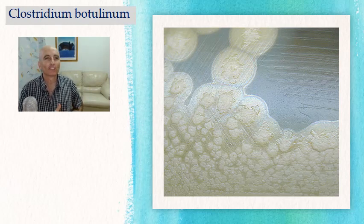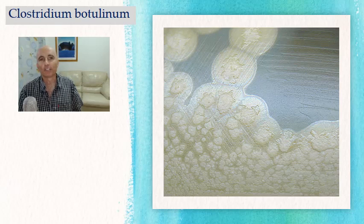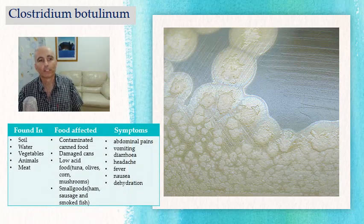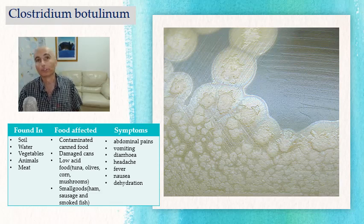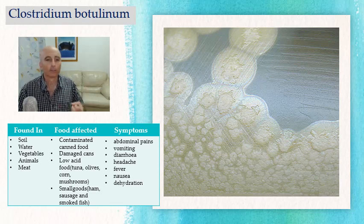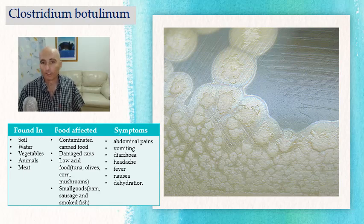One of the better known ones is Clostridium botulinum. It is anaerobic, so it doesn't need oxygen. It's found in soil, water, vegetables, and animals. The foods particularly associated with it are canned foods, damaged cans, low-acid foods like tuna or olives, and small goods. Symptoms include abdominal pain, vomiting, diarrhea, nausea, and severe dehydration. It produces a deadly toxin and people can actually die from this.